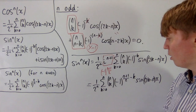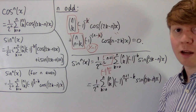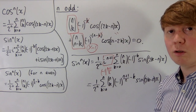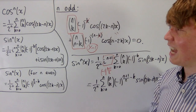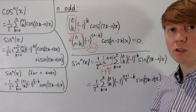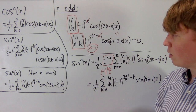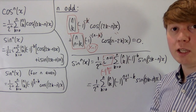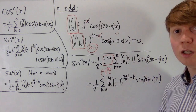A nice way to understand why we get cosines for cos^n(x) and for sin^n(x) when n is even, but sines for sin^n(x) when n is odd: cos^n(x) is always an even function, and sin^n(x) with n even is also an even function, so it's naturally expressed as a sum of cosines. When n is odd, sin^n(x) is an odd function, so it makes sense for it to be a sum of sines, which are odd functions.